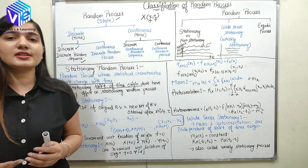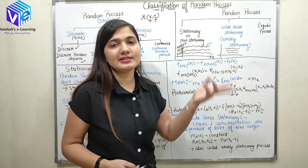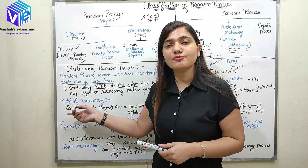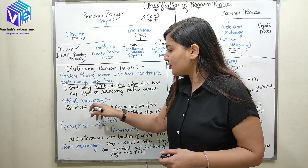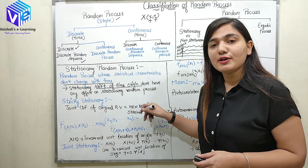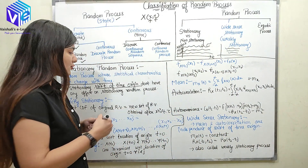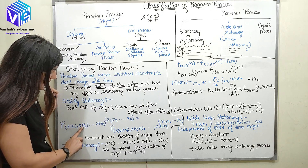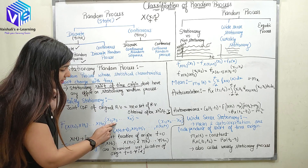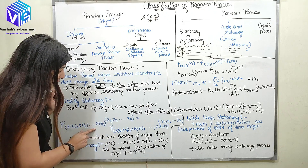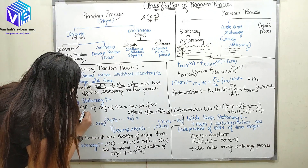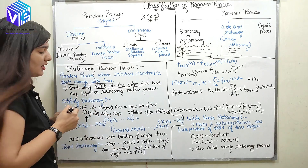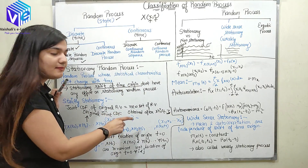Now, what is strictly stationary versus weakly stationary? If I call a random process strictly stationary, the condition is that the joint CDF of the original random variables must equal the joint CDF of the new set of random variables obtained after a time shift. Taking the shift to be tau, the original joint CDF — f_{x(t1), x(t2), ..., x(tn)}(x1, x2, ..., xn) — must equal the shifted version.